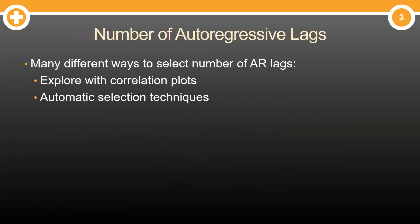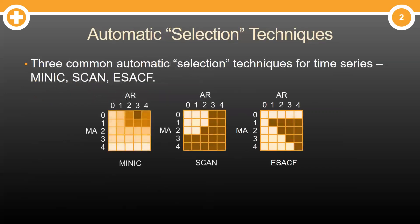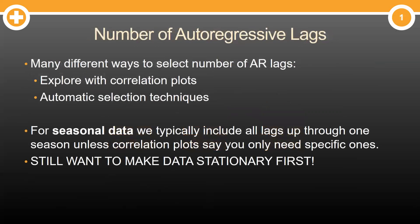Just like with everything, many different ways to do this. We could easily use some of the same ways we talked about with ARIMA models, where we explore correlation plots or use some automatic selection techniques. If you don't remember some of the automatic selection techniques like you see here that we talked about previously, click on the link in the upper right-hand corner for the ARIMA video. Now, if you have seasonal data, it's always good practice to include all the lags through at least one season.